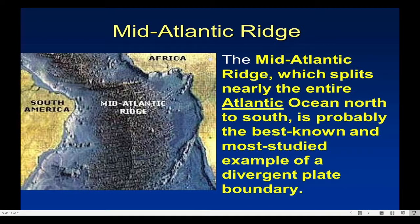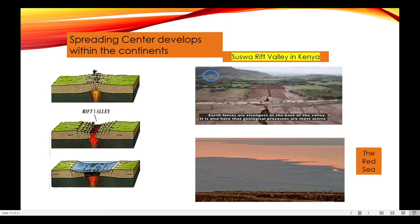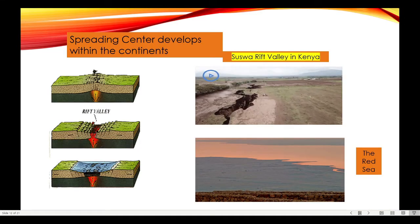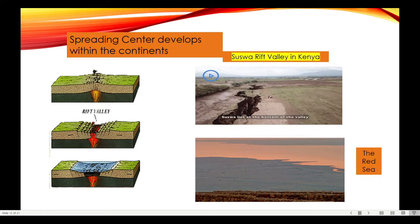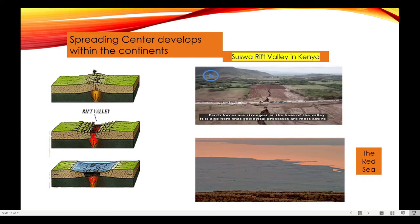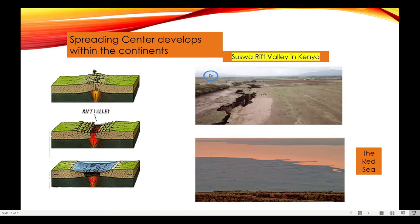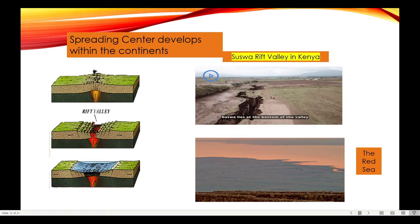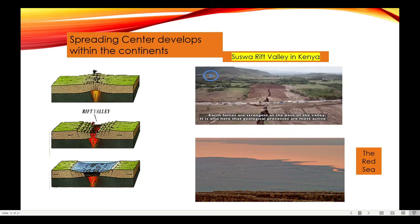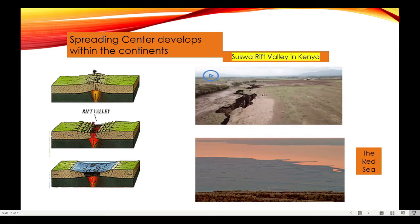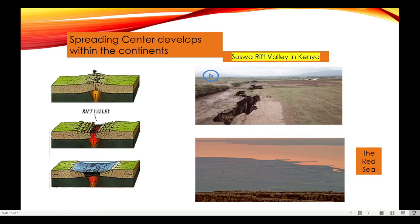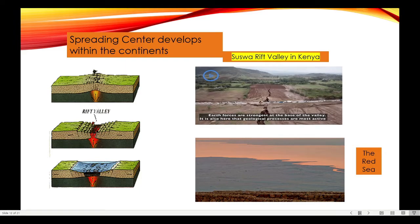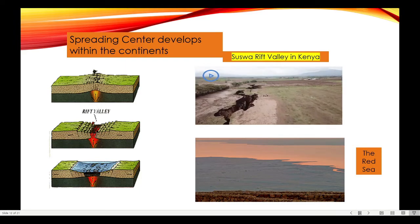On the other hand, when the spreading center develops within the continent, the crust may break into several segments. The breaking leads to the formation of down-faulted valleys known as rift valleys. It is also associated with the rising of hot magma from the mantle. The rift valley increases its length and depth as the spreading continues. At this point, the valley develops into a linear sea similar to the Red Sea today. Another example of the rift valley is the Suswa Rift Valley in Kenya.